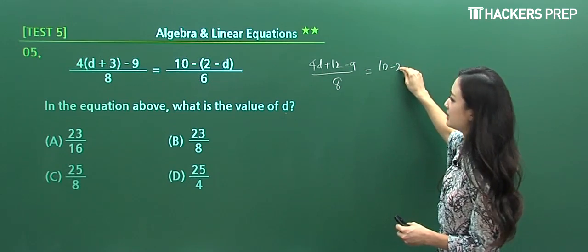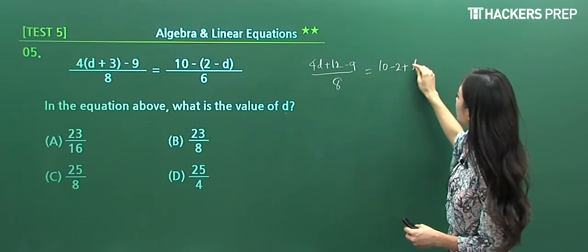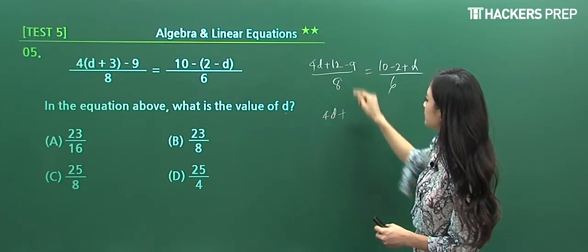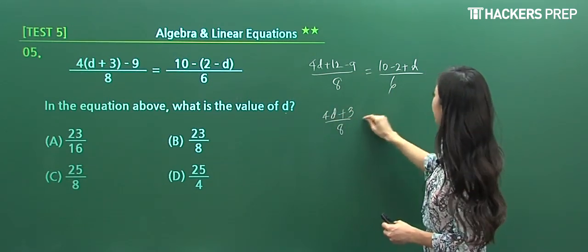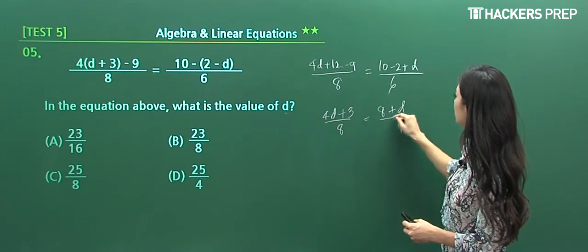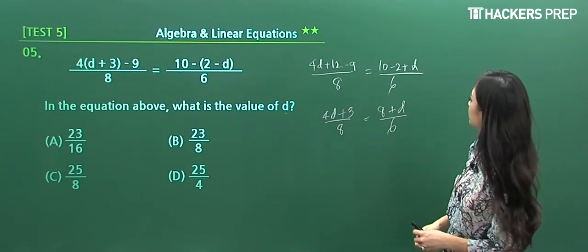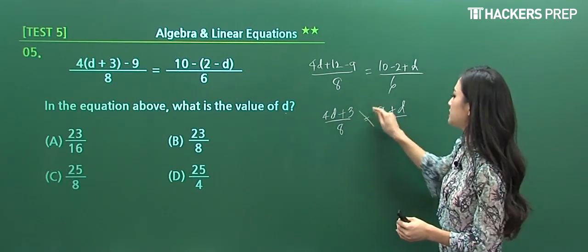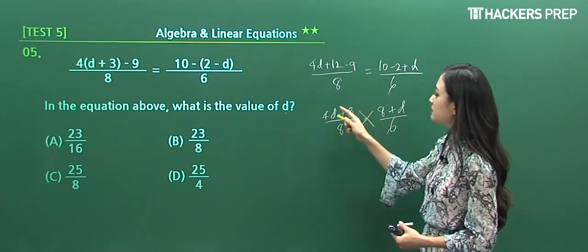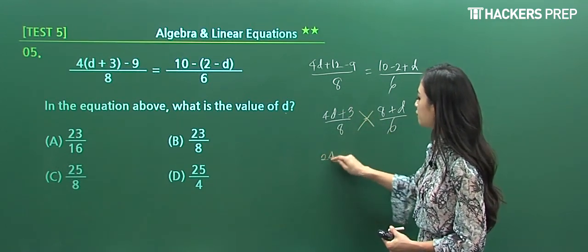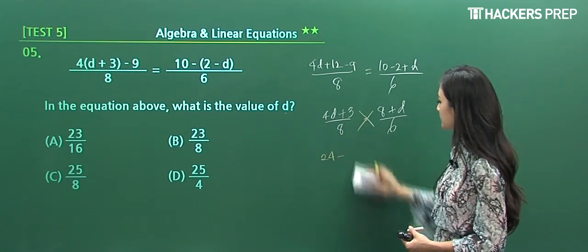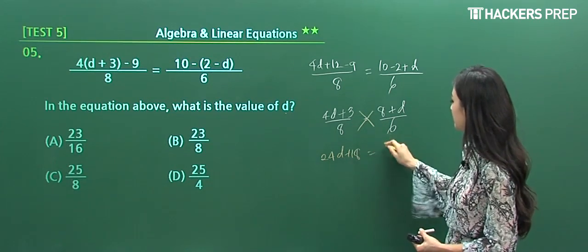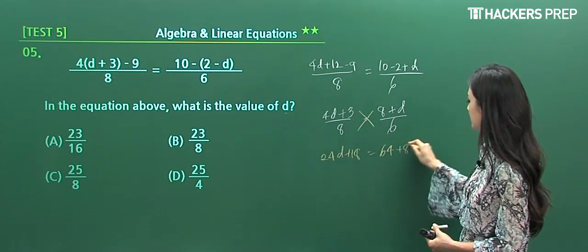The left-hand side becomes (4d + 3) / 8 and the right side becomes (8 + d) / 6. How do we finish this up? We can apply cross multiplication. You multiply 6 to the left side, so it becomes 24d + 18. The right side becomes 64 + 8d.